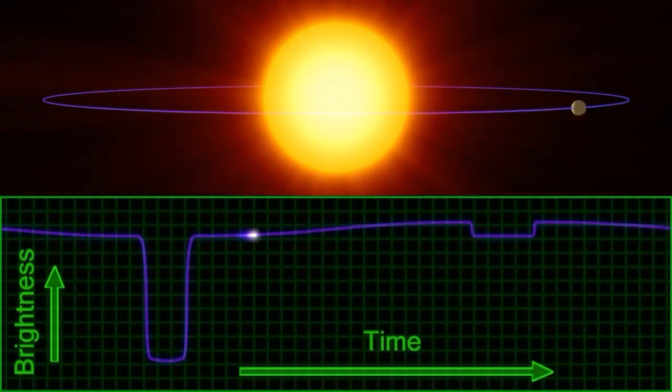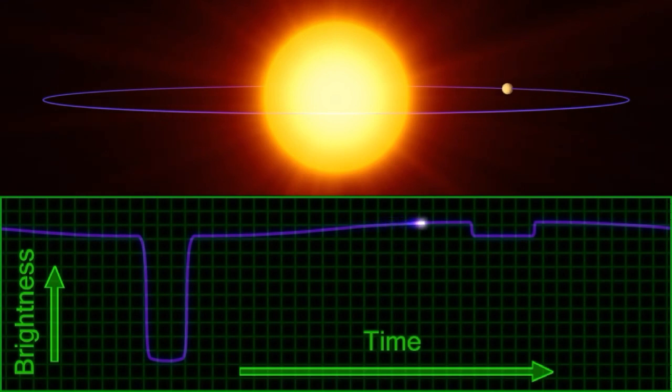So anyway, here is a simulation of the total orbit and transit of a planet around its star, showing you the flux profile as it does so. I'll let it go for a few seconds so you can watch it.